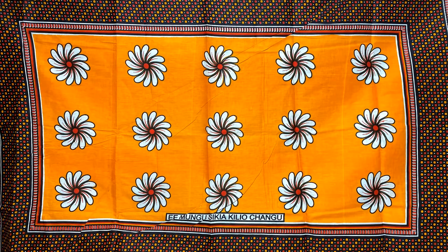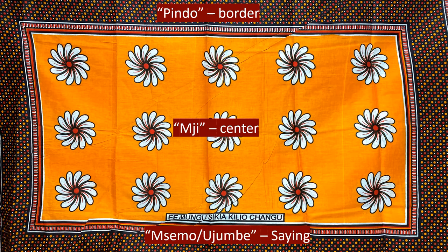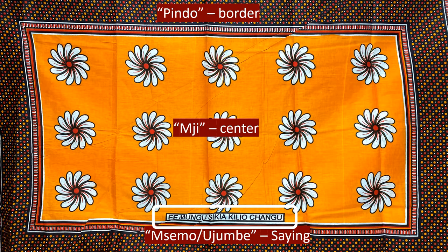A typical Kanga has three main parts: Pindo, which is the border surrounding the Mdi, which is the center. And finally, one of the most important parts of modern Kanga, the semi — also said as Nsemo or Uyumbe. This part is what sells the Kanga because it relays a message from the wearer to the world.